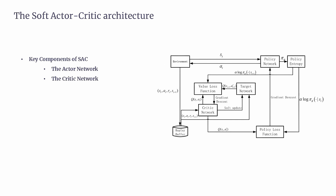The second component is the Critic Network. The critic's job is to evaluate the actor's choices — it estimates the value of taking specific actions in particular states. To reduce overestimation errors often seen in Q-learning, SAC uses two separate Q-networks. Third is the Replay Buffer, where all past experiences are stored: states, actions, rewards, and next states. During training, the algorithm samples from this buffer, allowing it to reuse valuable past data, which is a major factor behind SAC's efficiency.